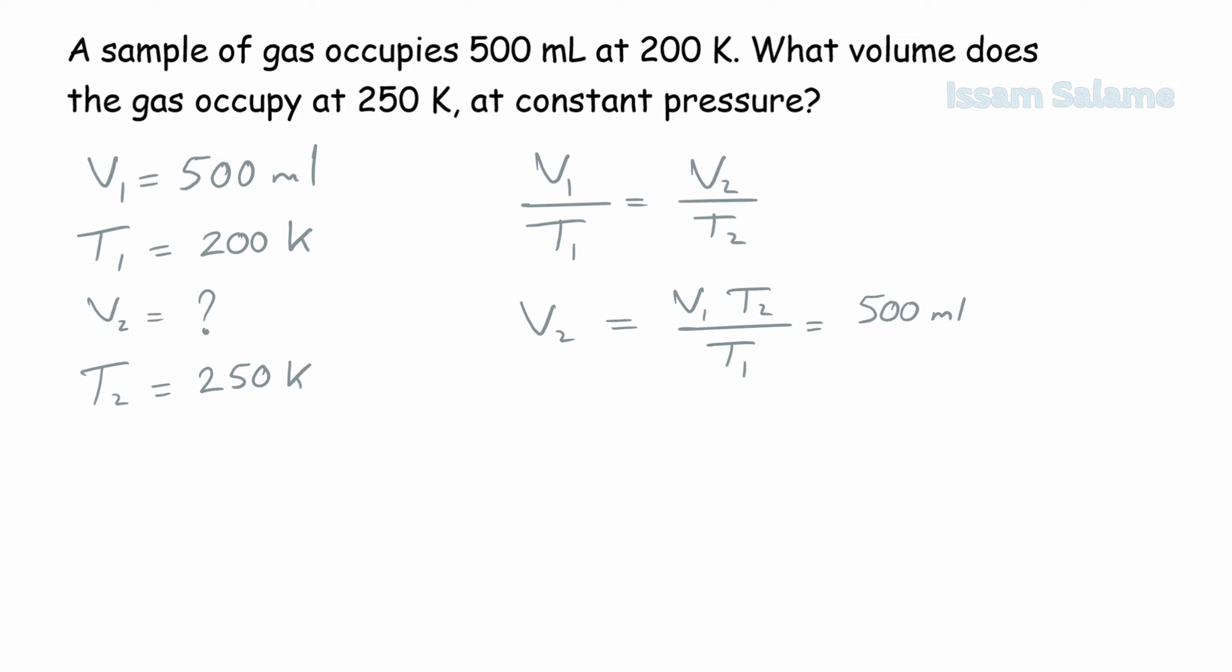We replace the variables by their values and do the math. We cancel similar units between denominators and numerators, and the answer is going to be 625 mL.